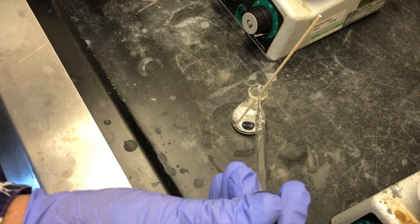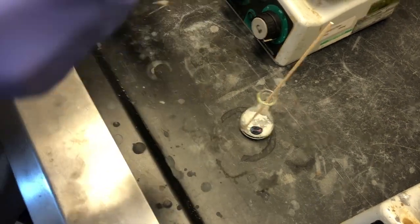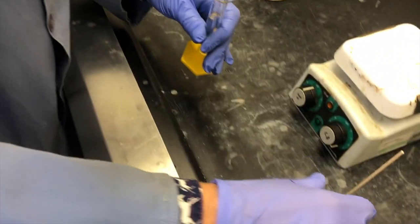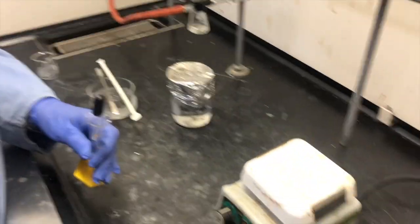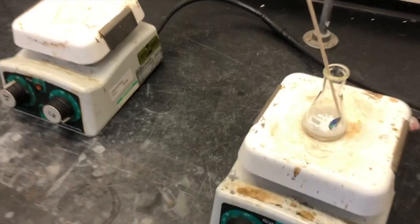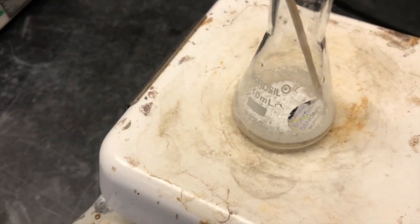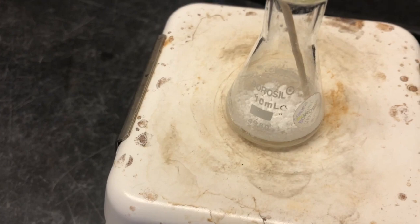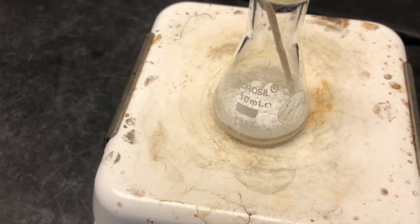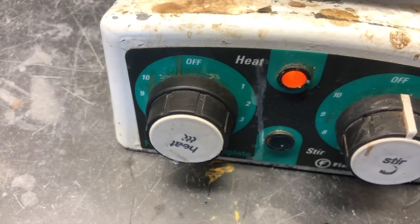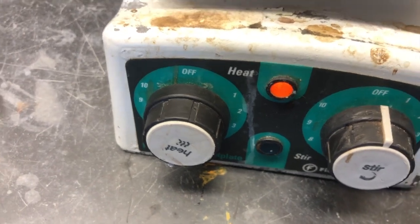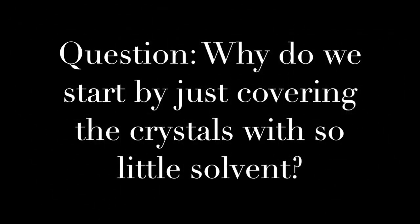We begin by adding a small amount of water from a graduated cylinder that originally had 10 milliliters of water exactly in it. We add just enough water to cover the crystals and then place it immediately on the hot plate. When recrystallizing from water it's okay to put your recrystallizing mixture directly onto the hot plate and set it at a temperature that would boil the water.